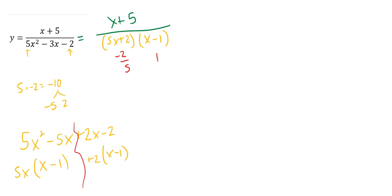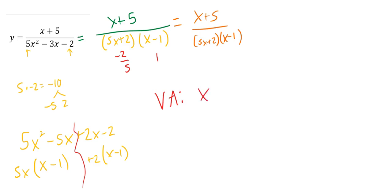In this case, I go to simplify and nothing cancels. I still have x plus 5 over 5x plus 2 times x minus 1. So both of them are vertical asymptotes — neither is a hole. Holes come from the things that cancel, and nothing canceled. So I have two vertical asymptotes: x equals negative 2 fifths and x equals 1.